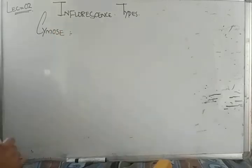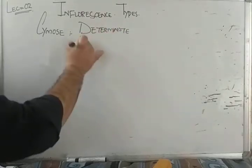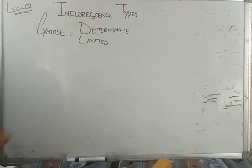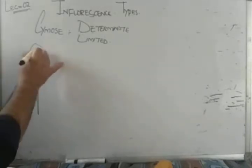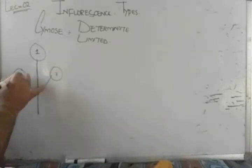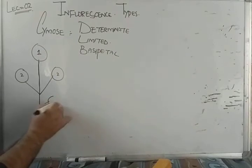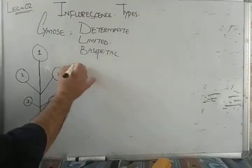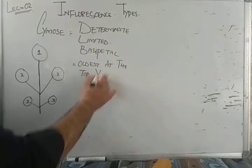We will discuss cymose inflorescence. This cymose inflorescence is called determinate inflorescence, or it is also called limited inflorescence, because in cymose inflorescence the main axis terminates into a flower. The first flower comes at the top, and then subsequent flowers come after it. The order is called basipetal — oldest flower at the top and youngest at the base.